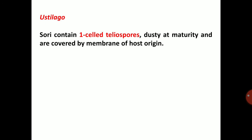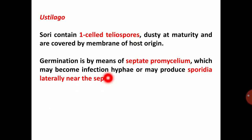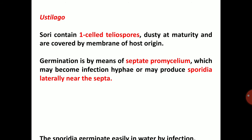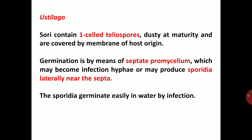Ustilago general characters: sori contain one-celled teliospores that are dusty at maturity and are covered by a membrane of host origin. Germination is by means of septate promycelium, which may become infection hyphae or may produce sporidia laterally near the septa. Sporidia germinate easily in water by infection. Hyphae may multiply by budding.